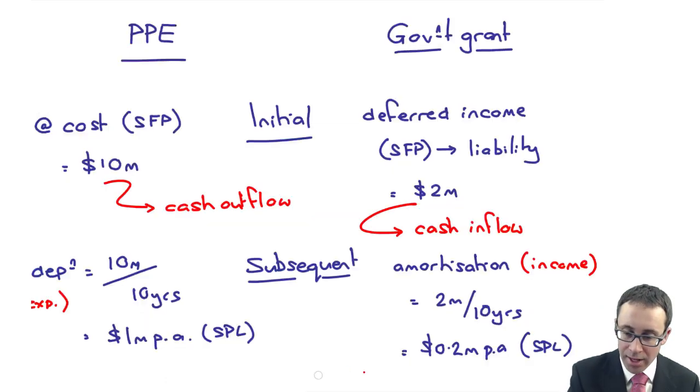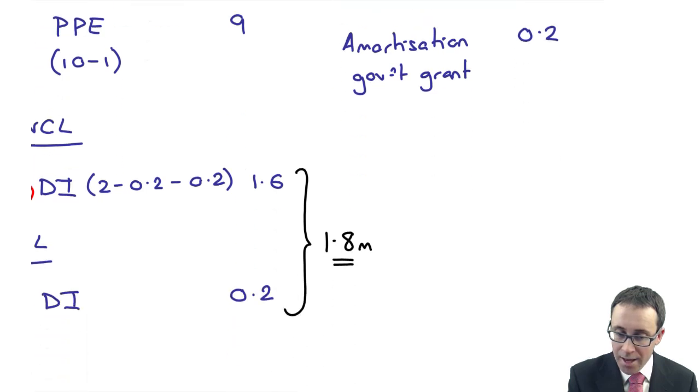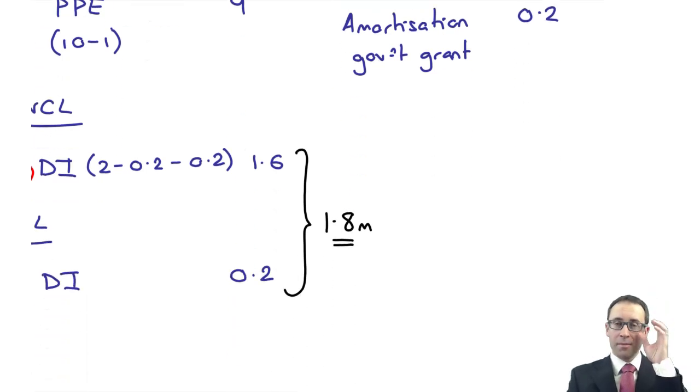So as an example, in our situation here, we had 1.8 million worth of deferred income. Imagine for some reason, the government wanted the whole 2 million back. They said they made a mistake. We shouldn't have given you the 2 million. We want that money back. So you credit the bank with 2 million. You're going to debit the deferred income, what's left at 1.8. So you need to process another 0.2, which goes to profit or loss.